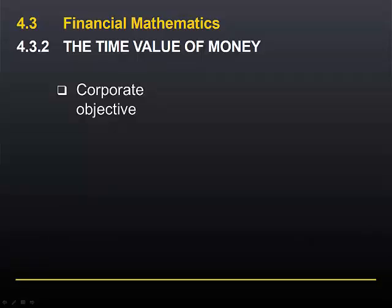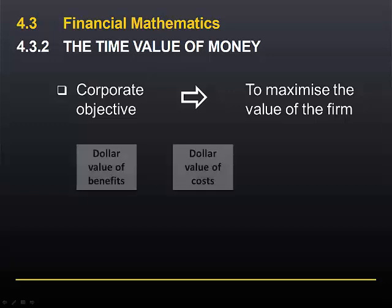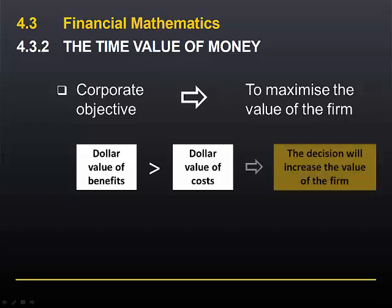One of the fundamental principles of finance is that the objective of corporate financial decision making is to maximise the value of the firm. In contemplating any decision or course of action, we need to compare the dollar value of the benefit against the dollar value of the cost. If the dollar value of the benefit exceeds the dollar value of the cost, then going ahead with that decision or course of action will increase the value of the firm.